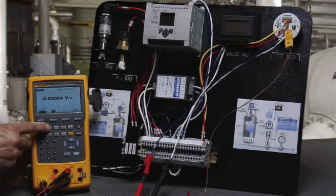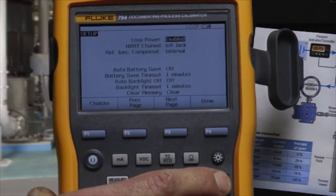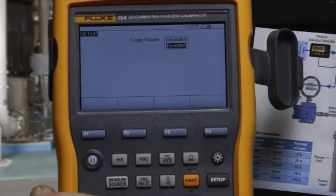To start the test, we want to measure milliamps and turn on loop power. Setup, enter, enabled.